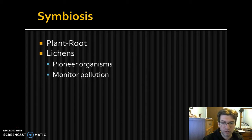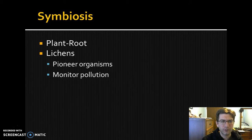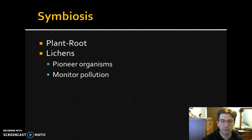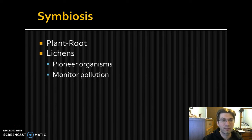Lichens are a combination of protists and fungi, growing off of rocks or tree stumps. They look very flaky. They are pioneer organisms — among the first introduced into a new environment — and also among the first to disappear when pollutants enter an environment. If a forest has no lichens, there is probably a pollutant killing them off. Conversely, when lichens start forming again after cleanup efforts, it indicates the pollutant is mostly gone, making lichens useful for monitoring pollution levels.